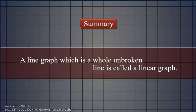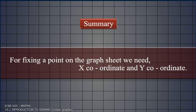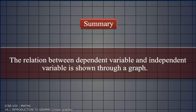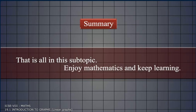A line graph displays data that changes continuously over periods of time. A line graph which is a whole unbroken line is called a linear graph. For fixing a point on the graph sheet, we need x-coordinate and y-coordinate. The relation between dependent variable and independent variable is shown through a graph. So that is all in this subtopic. Enjoy mathematics and keep learning!